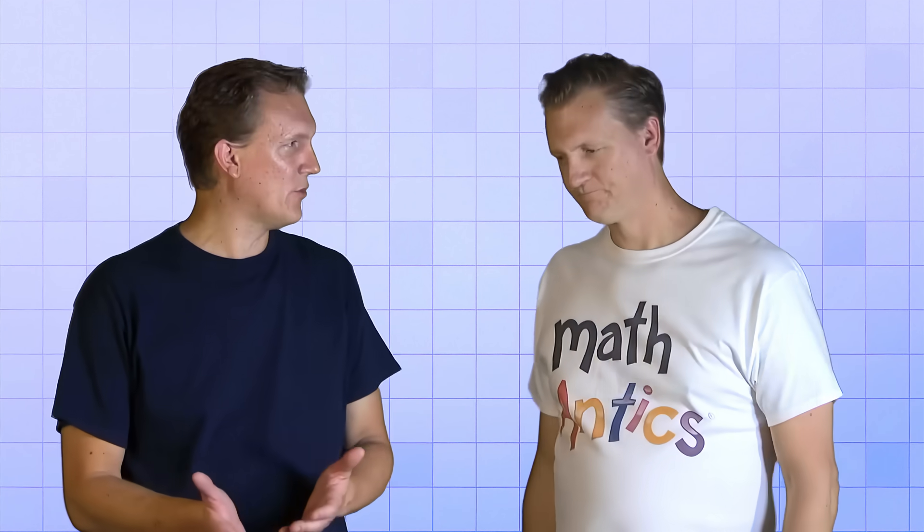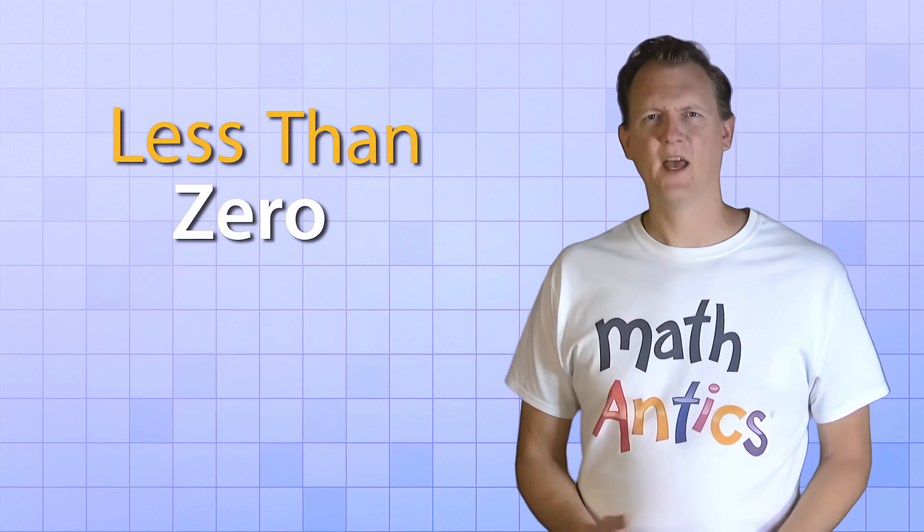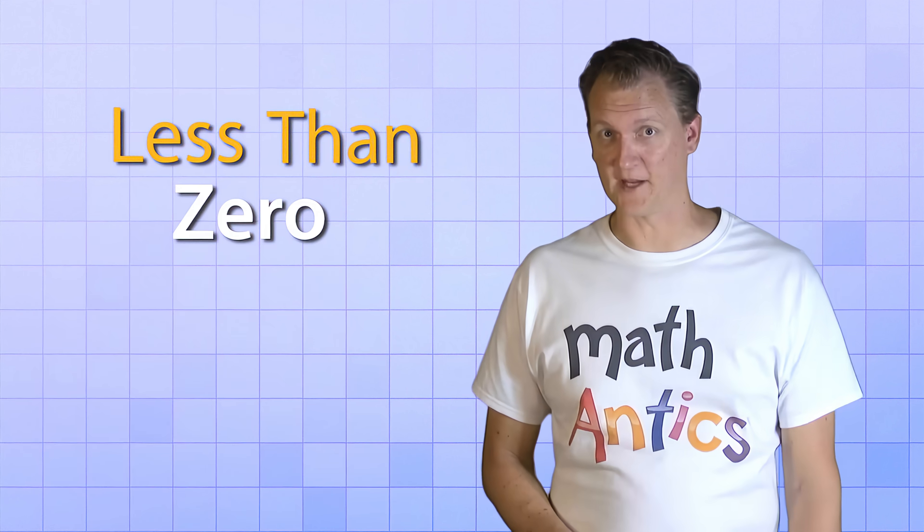What? Hold on a second. Less than 0? How can any number be less than 0? I mean, doesn't 0 mean nothing? That's a good question. At first, it can be hard to see how there could be numbers that are less than 0. But here's an example that will help you understand.